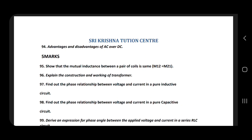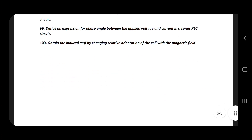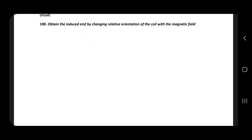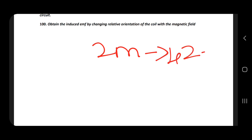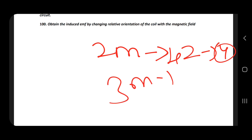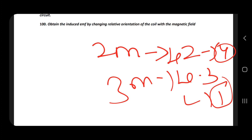The 3-mark section is orientation-related. For 2-mark, we have compulsory numerical problems. Today we are covering 3-mark and 2-mark questions. Numerical problems carry 3 marks, 3 marks, and 5 marks — this is why we have 50 marks total.